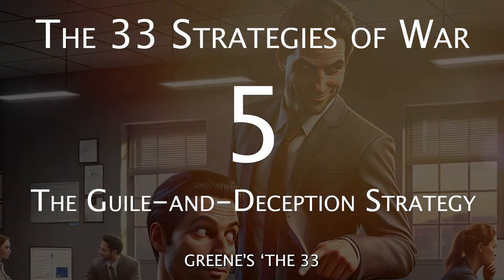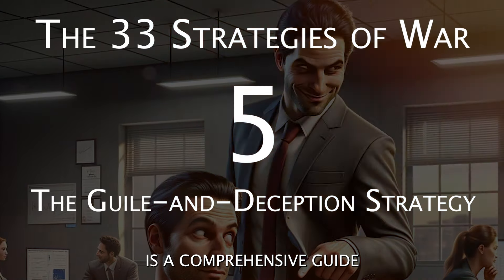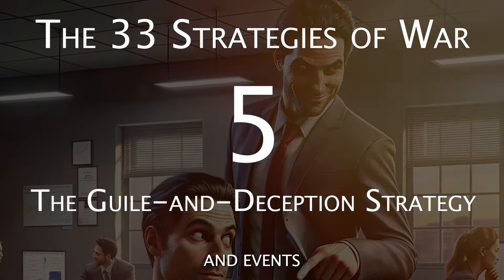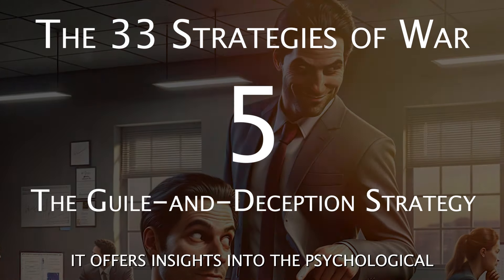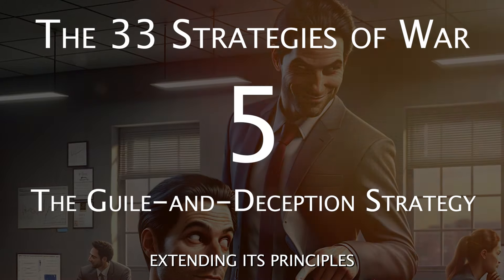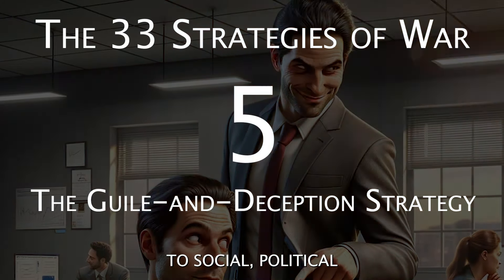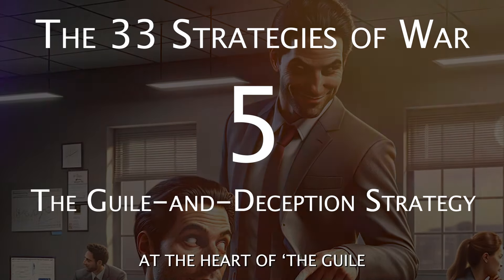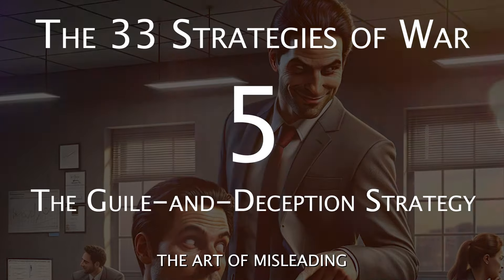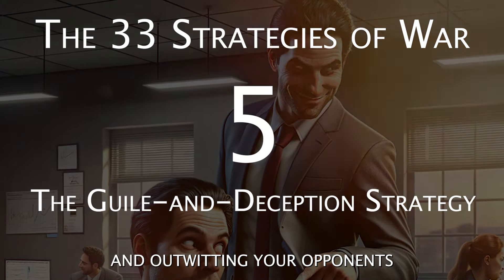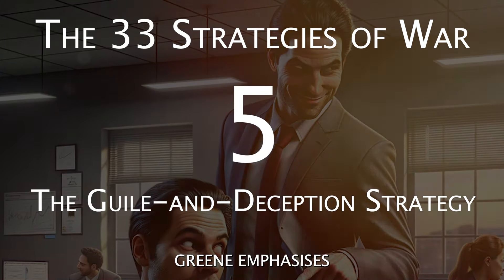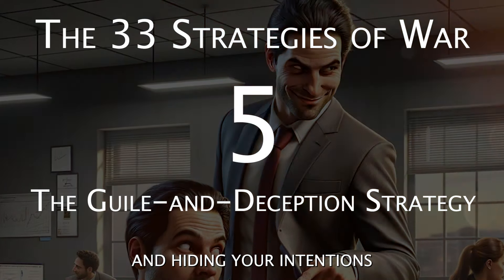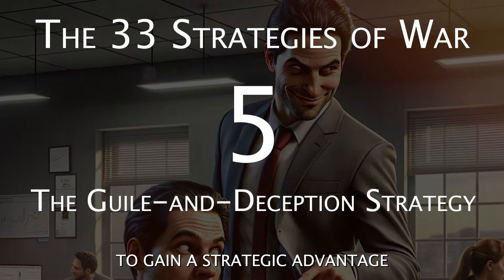Robert Greene's The 33 Strategies of War is a comprehensive guide that draws from historical figures and events. It offers insights into the psychological aspects of warfare, extending its principles to social, political, and personal conflicts. At the heart of the Guile and Deception strategy lies the art of misleading and outwitting your opponents. Greene emphasizes the importance of misdirection, creating illusions, and hiding your intentions to gain a strategic advantage.